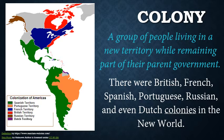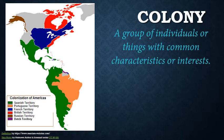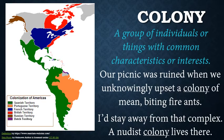Let me use the word in a sentence: there were British, French, Spanish, Portuguese, Russian, and even Dutch colonies in the New World. You can see here the map of all the different colonies. New York State was originally founded by the Dutch. A lot of times we talk about the location where these people live, but it can also refer to the people themselves. For example: our picnic was ruined when we unknowingly upset a colony of mean biting fire ants. Colonies can describe large groups of similar animals as well.